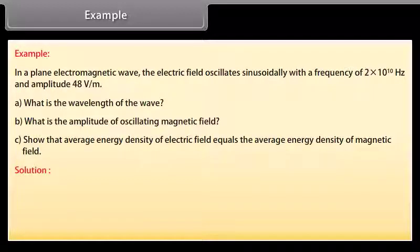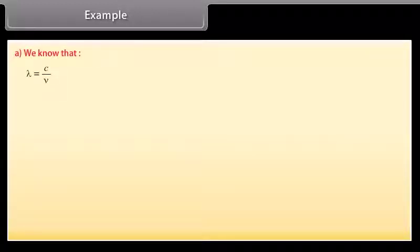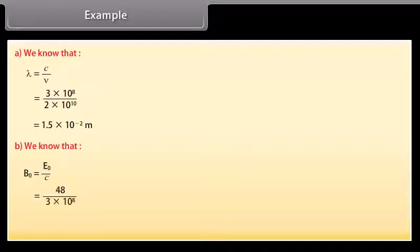Let's see the solution. Given values are nu which is equal to 2 into 10 raised to the power 10 Hertz, E naught equals 48 volt per meter. We know that lambda is equal to C upon nu. By putting and calculating the values we get wavelength of the wave which is equal to 1.5 into 10 raised to the power minus 2 meter. We know that B naught is equal to E naught upon C. By putting and calculating the values we get amplitude of the magnetic field which is equal to 1.6 into 10 raised to the power minus 7 Tesla.